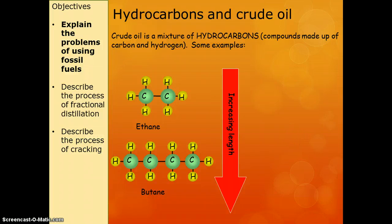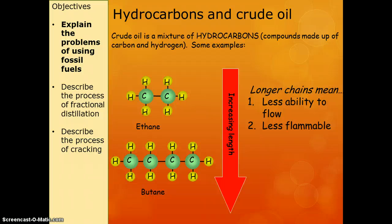As the length of our chain increases, the properties of our hydrocarbons change. They're less able to flow, so that means they're hard to pour. They get more treacle-like as the chain gets longer. They are less flammable, so they're harder to set on fire if we want to use them for energy.